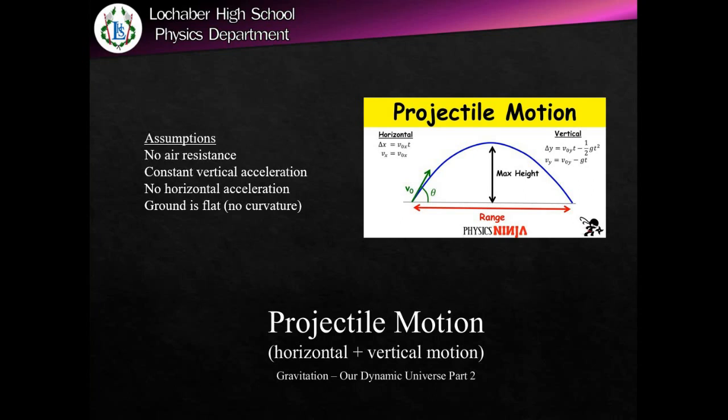This week's work is on projectile motion. This is essentially the equations of motion working in two separate dimensions, the vertical case and the horizontal. Mathematically, anytime you have two vectors that are at 90 degrees to each other, they're said to be independent — that means they don't influence each other — and we're going to use that assumption here.